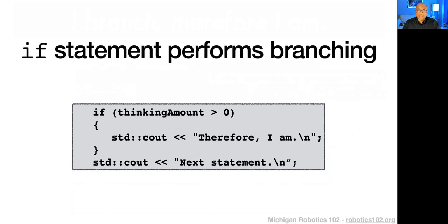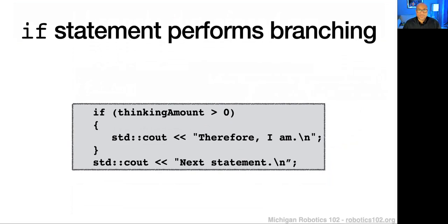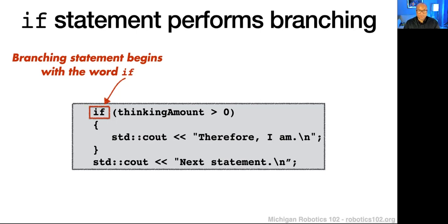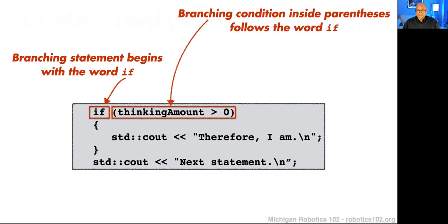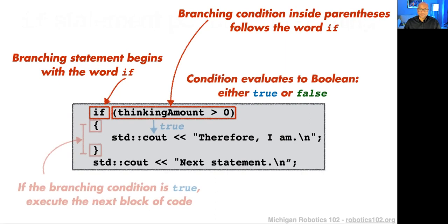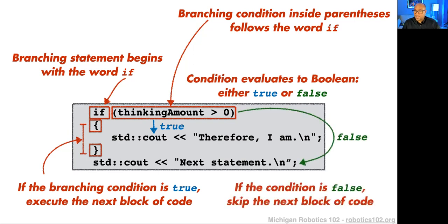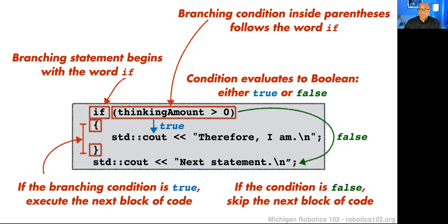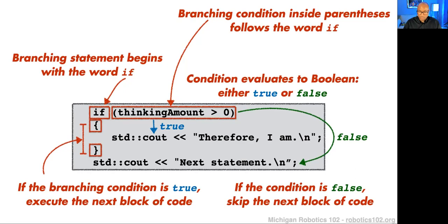The if statement is the core of what we do for having our program branch. The way the if statement is structured: we start with the word 'if,' which is a reserved word. Then there's a branching condition inside parentheses. That branching condition will evaluate to a Boolean, meaning it will either be true or false. If that condition is true, we're going to execute the code inside the braces. If the condition evaluates to false, we skip that next block of code.